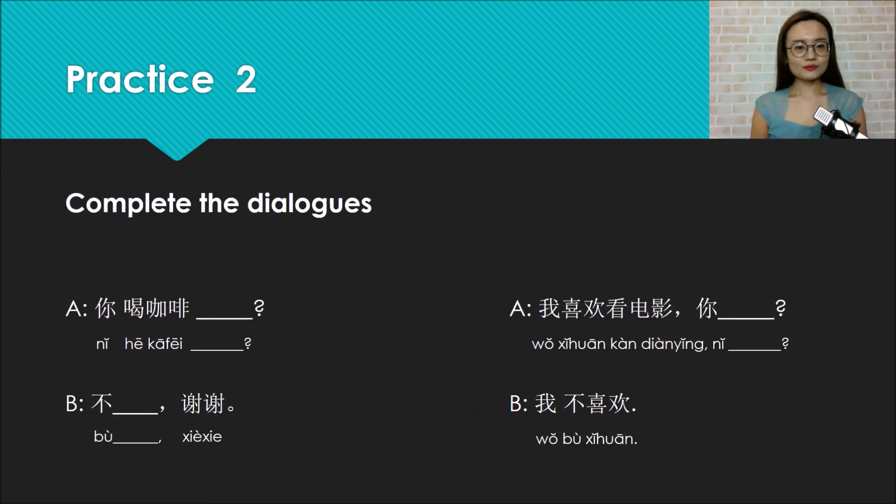Practice two. Complete the dialogues. First one: Ni he kafei? This question is asking do you drink coffee. It's a yes or no simple question, right? So what's the question mark? Yes, ma. Ni he kafei ma? Do you drink coffee? How do you give a negative answer? Yes, bu plus a verb. So the answer is bu he, xie xie. No thanks.